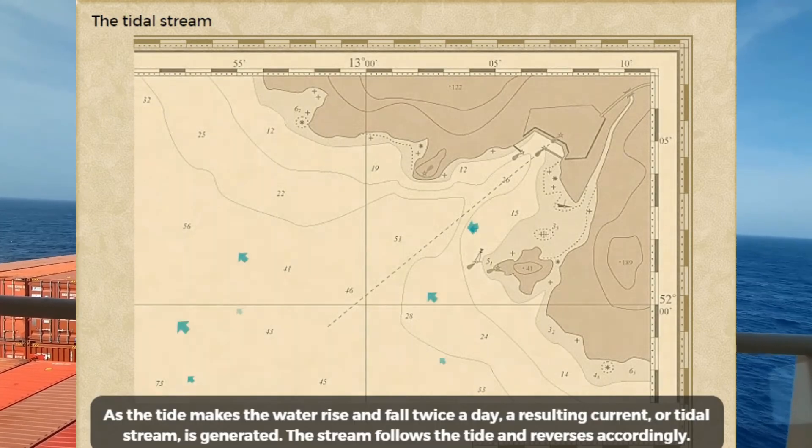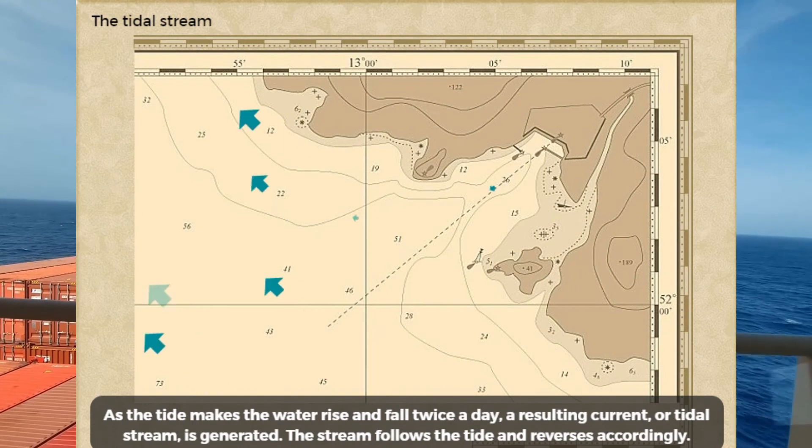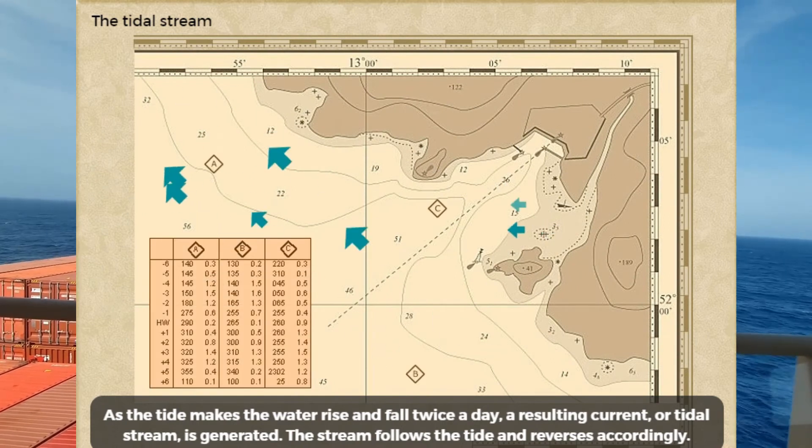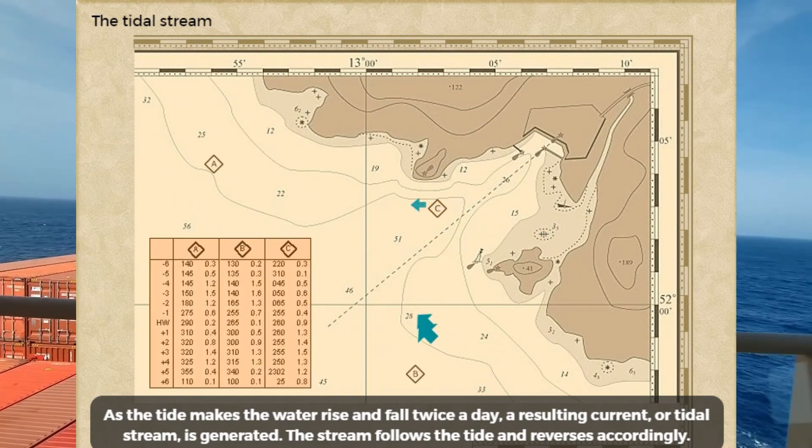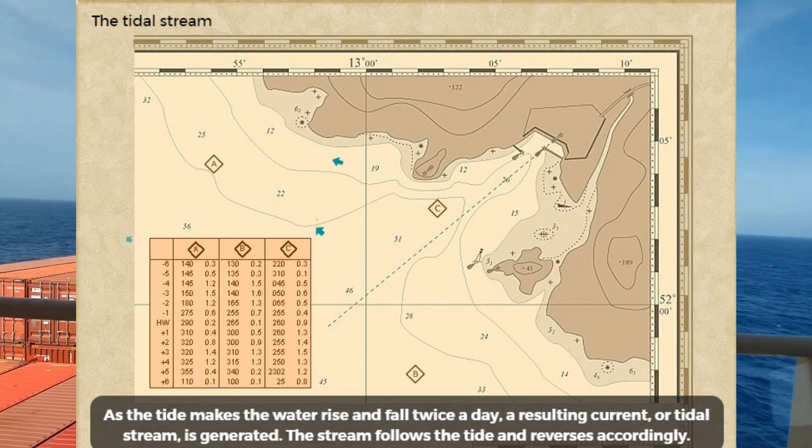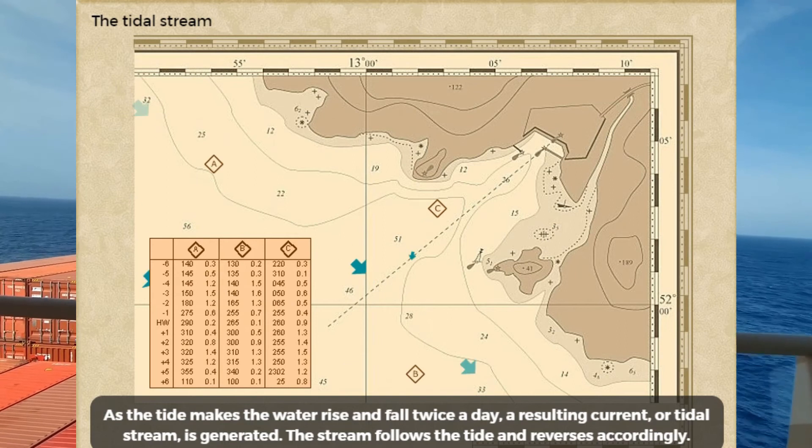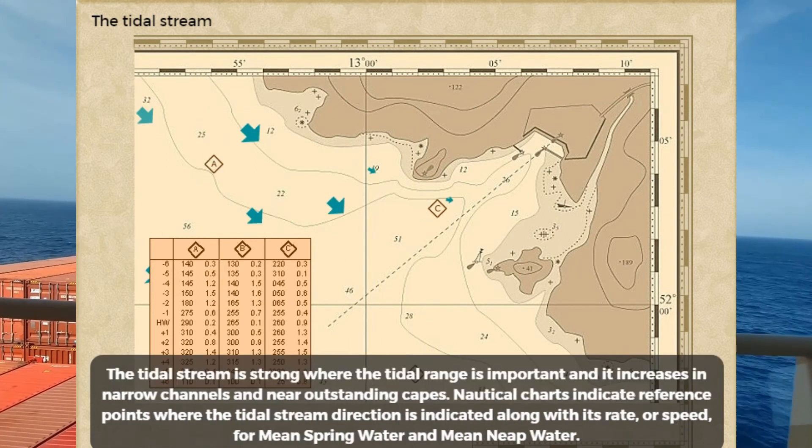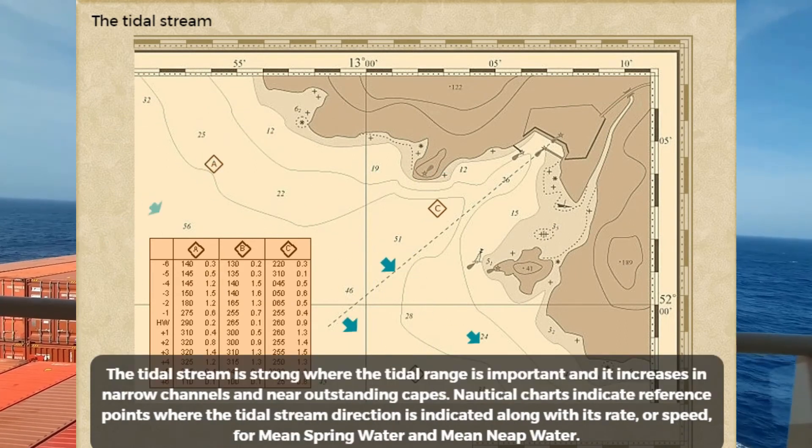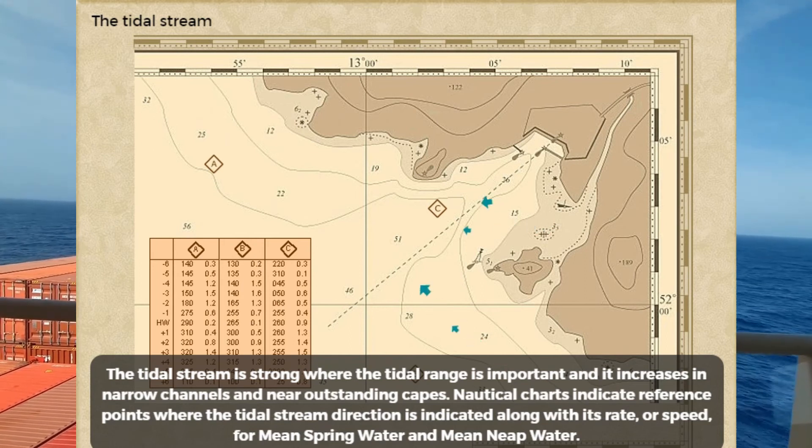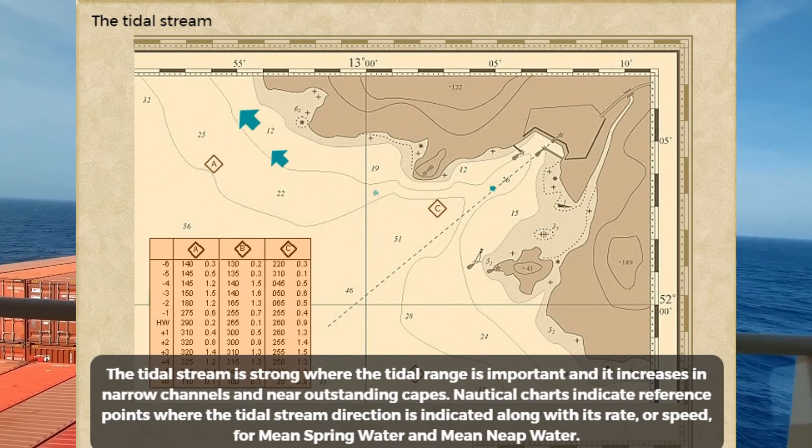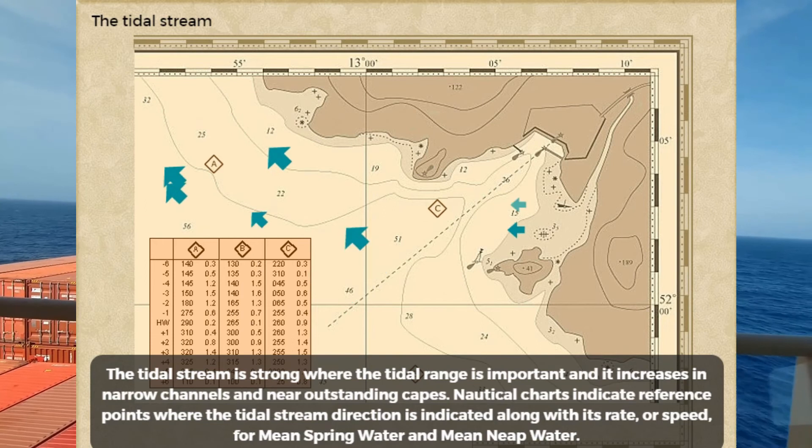As the tide makes the water rise and fall twice a day, a resulting current or tidal stream is generated. The stream follows the tide and reverses accordingly. The tidal stream is strong where the tidal range is important, and it increases in narrow channels and near outstanding capes.